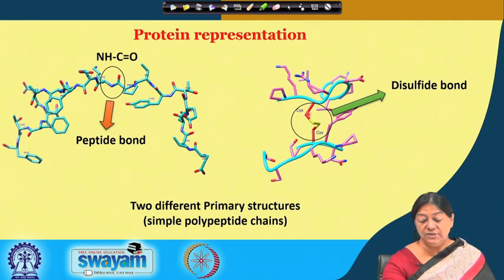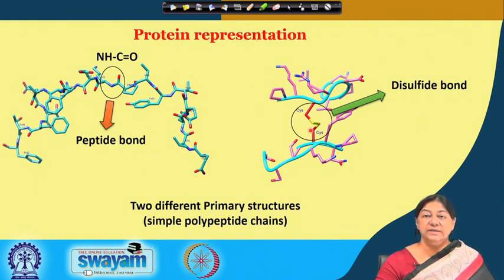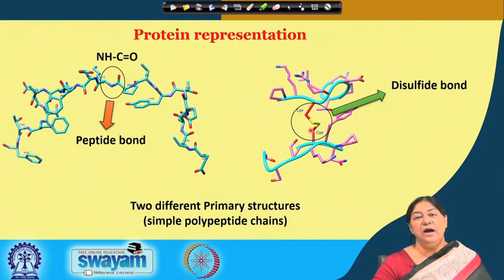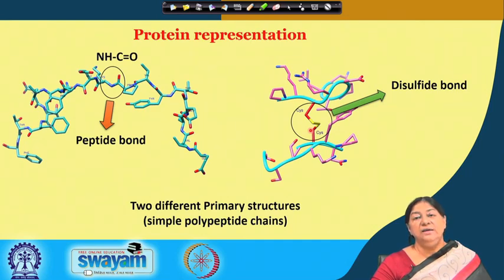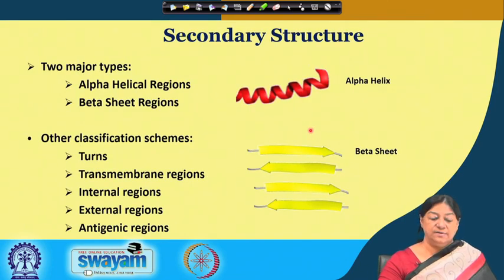Two cysteines linked together form a disulfide bond. This is how proteins are represented in three-dimensional structure, giving us an idea of where amino acid residues are in three-dimensional space. When we study enzymes, we will see which amino acid residues are present at the active site.